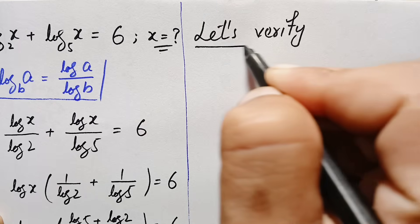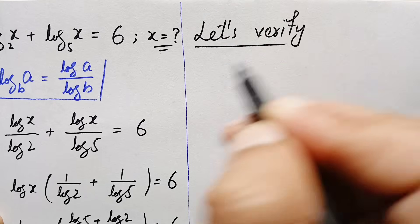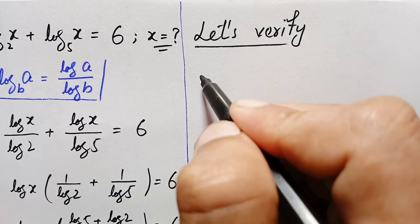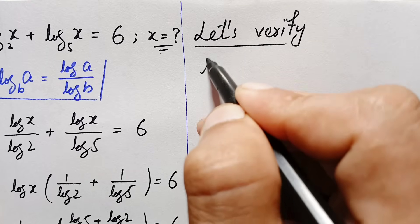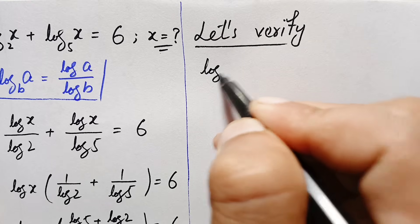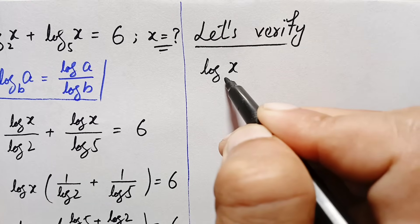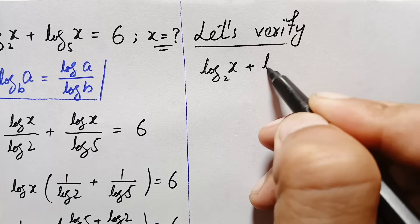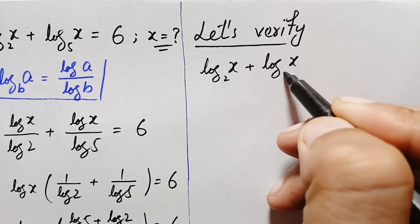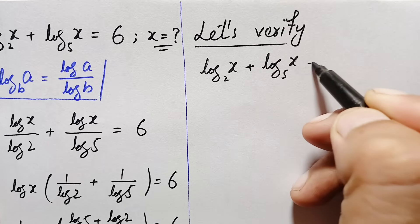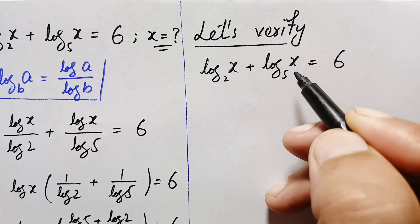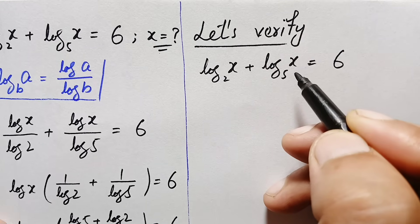Let's verify the value of x. Our problem is: log of x with base 2 plus log of x with base 5 is equal to 6, where x is 5 raised to the power 6 times log of 2.